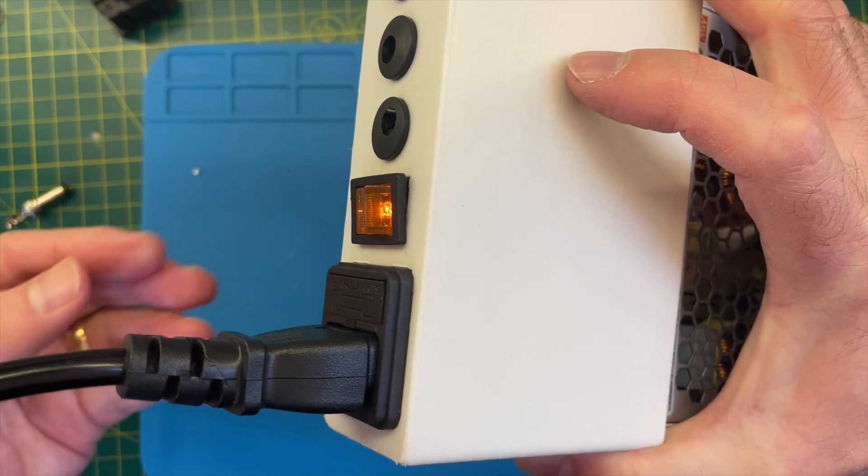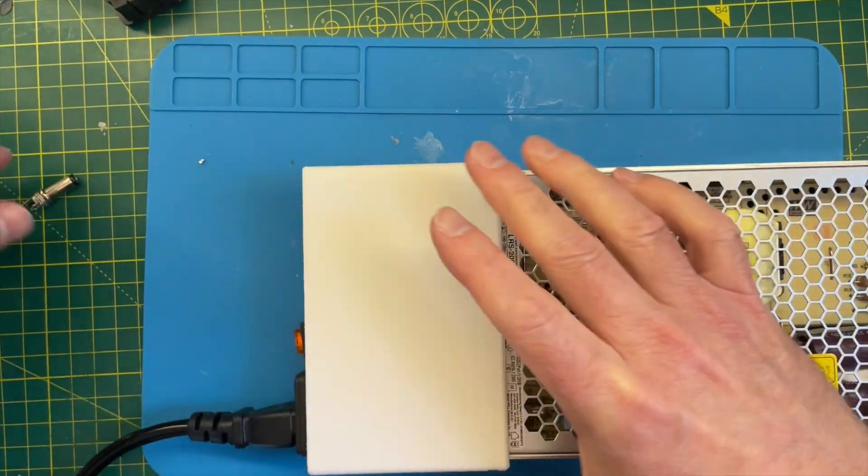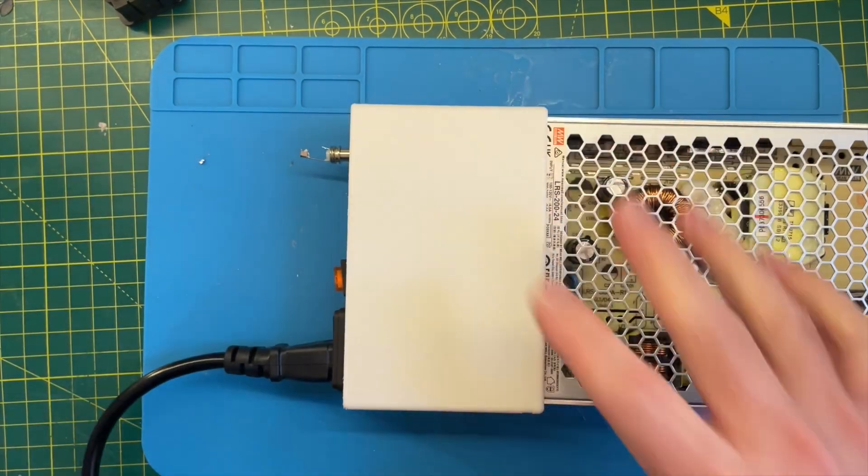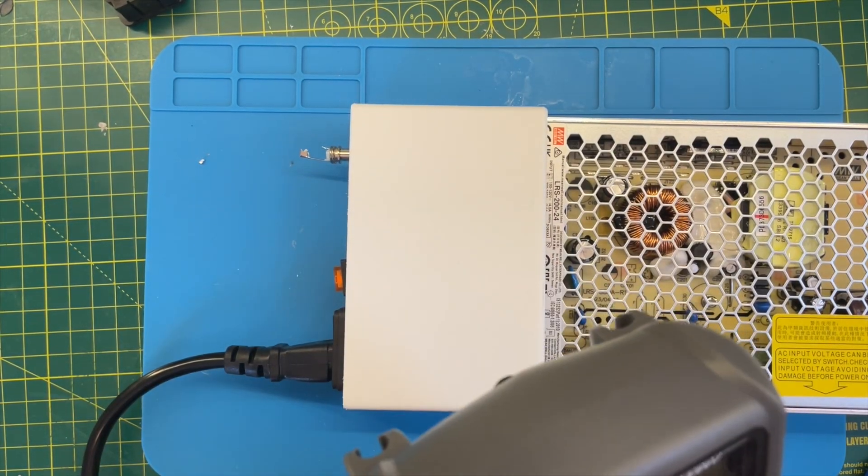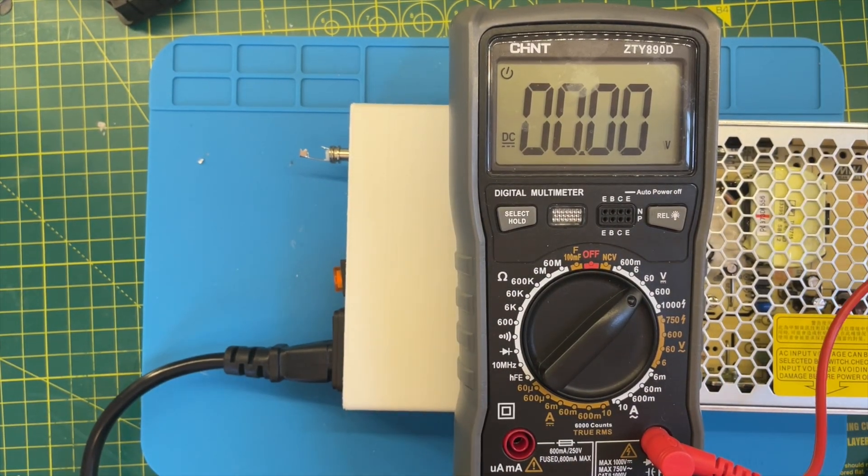We can turn our switch on, we have our nice light, and if I plug in a little socket here, let's see, we should get 24 volts. So that's not bad.